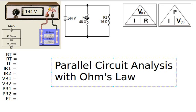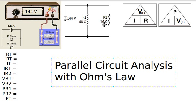We can simplify this circuit to one with only one resistance by combining R1 and R2. We might be tempted to add the two resistors together, but that would not be correct. In a parallel circuit the resistance is always less than the least resistor. Therefore this circuit must have less resistance than 16 ohms, so 64 ohms would not be correct.